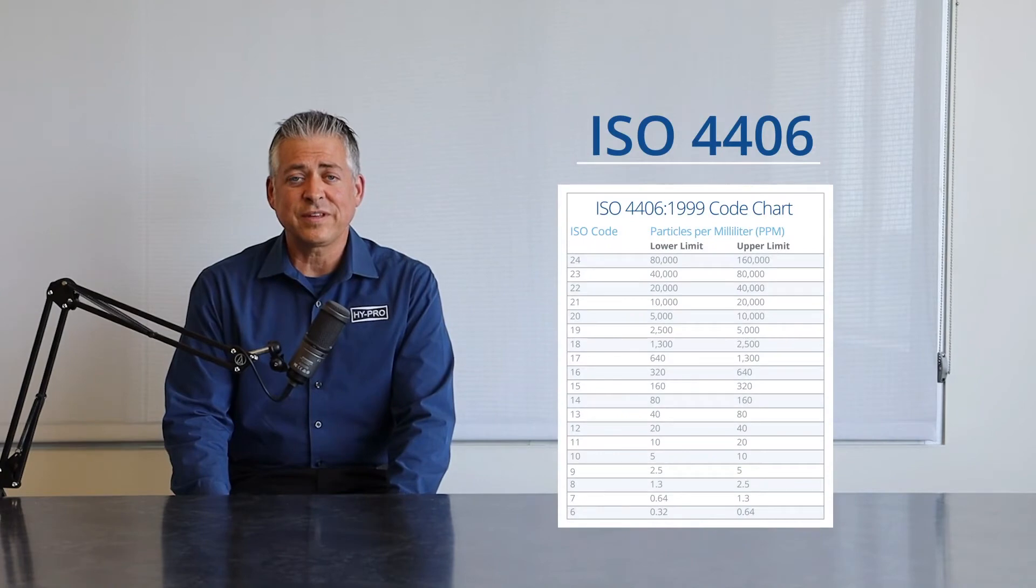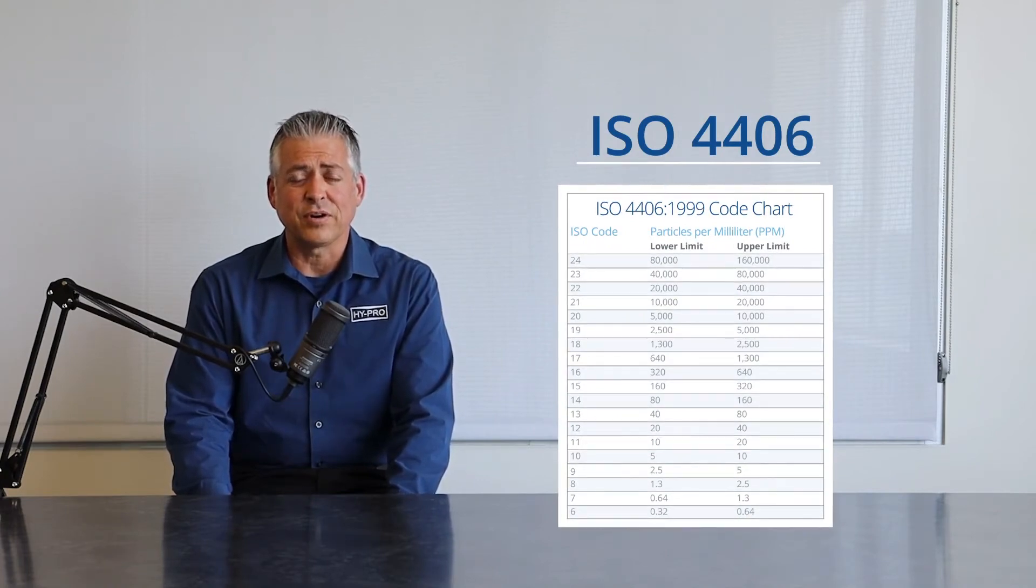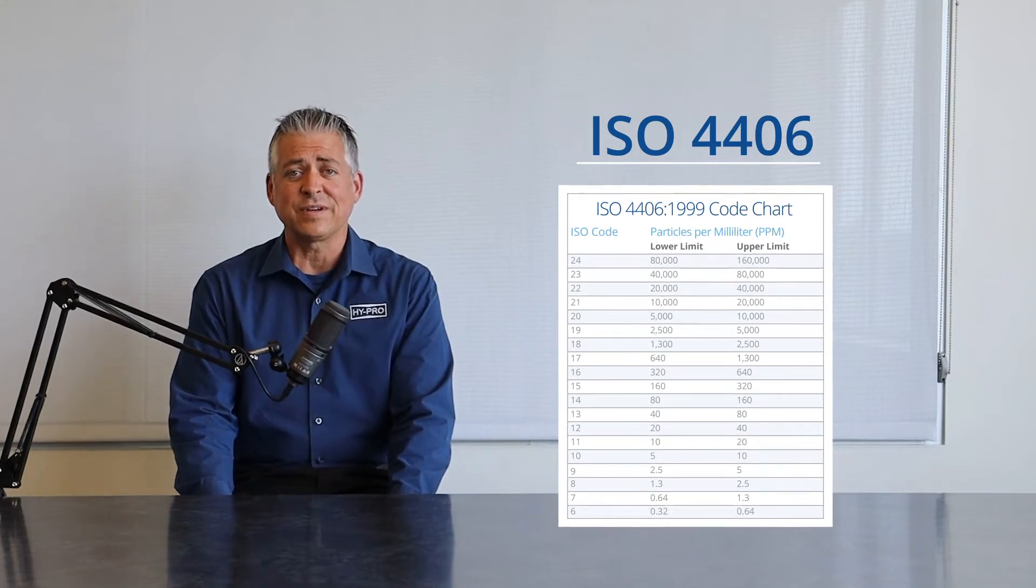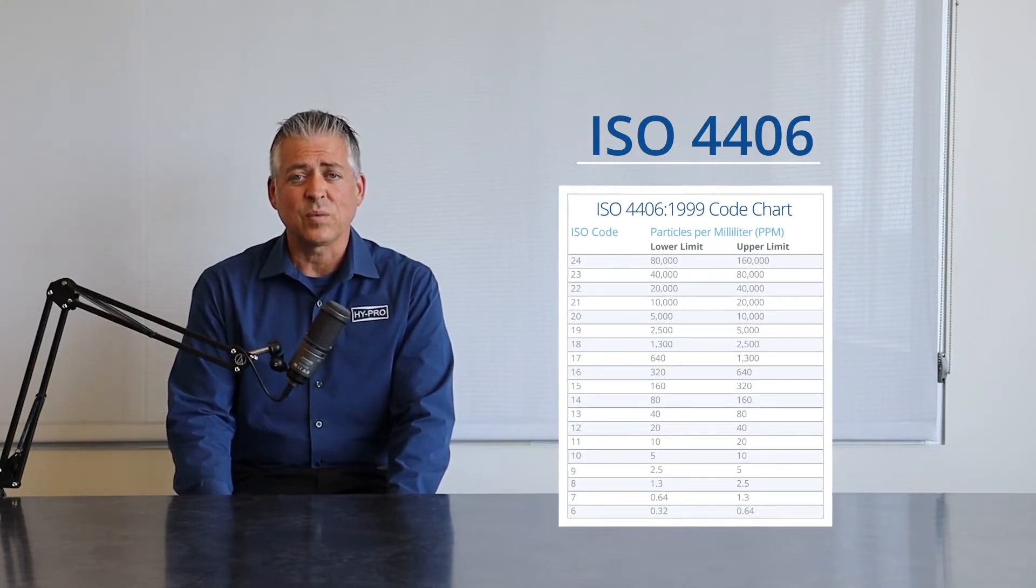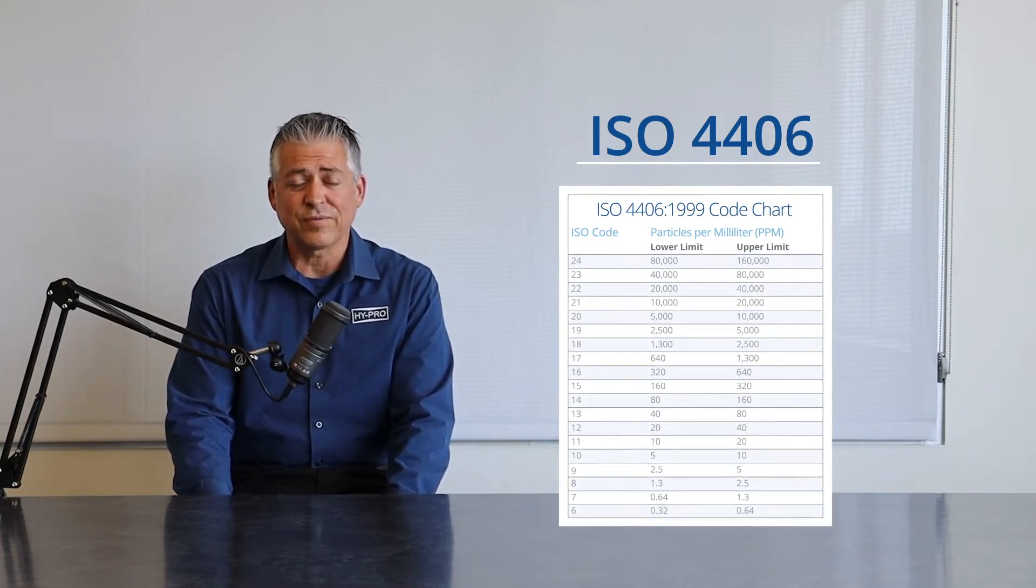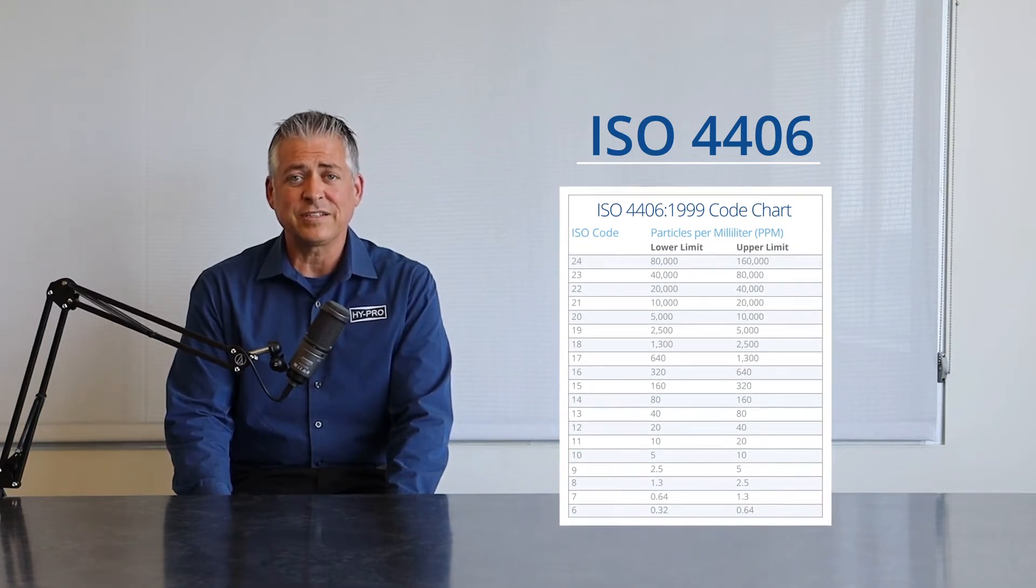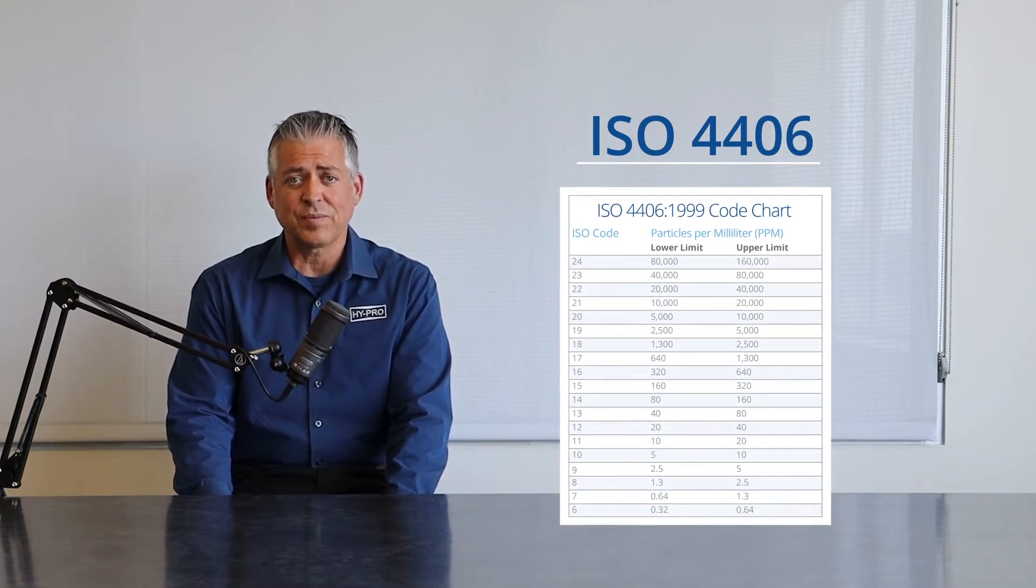ISO 4406 is the ISO cleanliness code chart that is used internationally to describe particles per milliliter in concentration in oil. Whether the report is from a lab or from your own laser counter, there will be up to eight channels that's represented on this report.